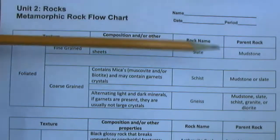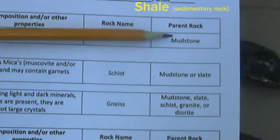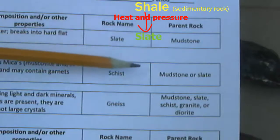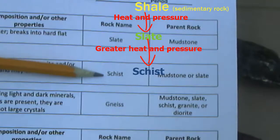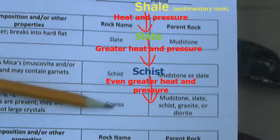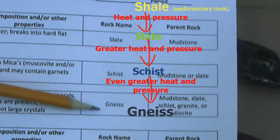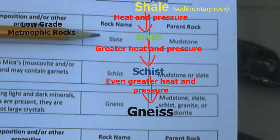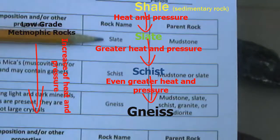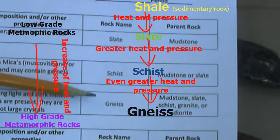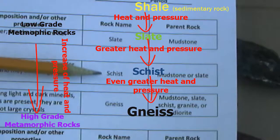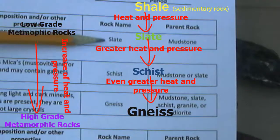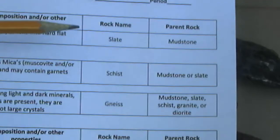Looking at parent rocks, you can start with a shale and turn it into slate, then into schist — careful how you pronounce that — and even further into gneiss. These represent different grades of metamorphosis. The further along the sequence, the more heat and pressure is required to produce it. So a gneiss rock has undergone higher grade metamorphosis than schist, and schist higher than slate. This gives us information on the conditions in which the rock formed.